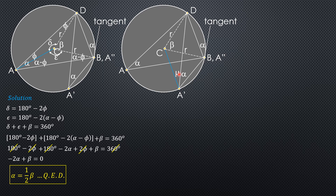If I call this angle mu, defined by angle CA'D, then angle DA'C is also mu because this is an isosceles triangle. Therefore, because triangle A'BC is also an isosceles triangle, the total angle at A' is mu plus alpha, so the other base angle is also mu plus alpha. If I call the apex angle gamma, then gamma equals 180 degrees minus 2 times the quantity mu plus alpha.